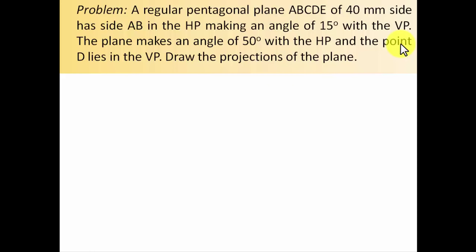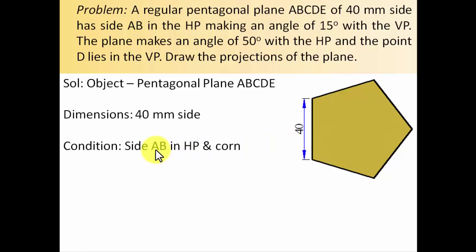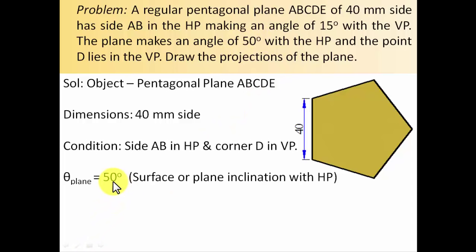Let's sort them out one by one. We have this pentagonal plane, 40mm side, and all the internal angles are 108 degrees each. We have the condition: side AB in the HP and corner D in the VP. The surface inclination is clearly given as 50 degrees with the HP, so theta plane equals 50 degrees.